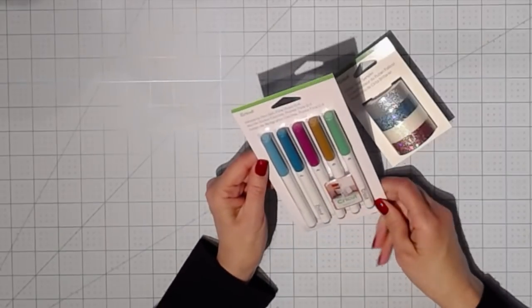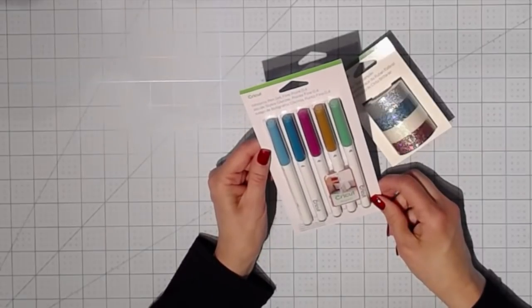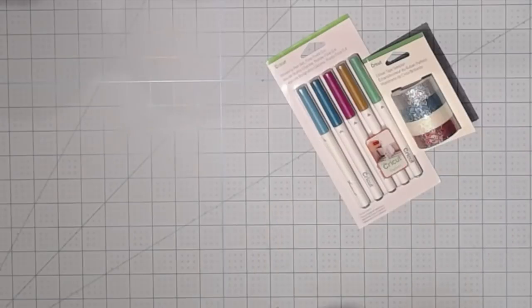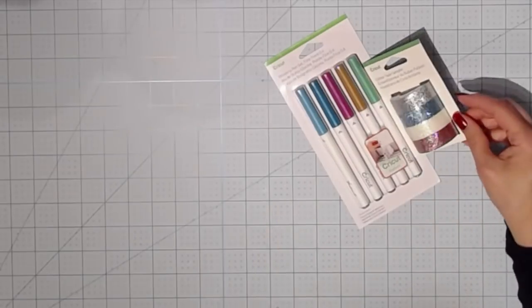Next we have a wisteria pen set fine point. You have five colors. Oh, they look beautiful with the glitter tapes.